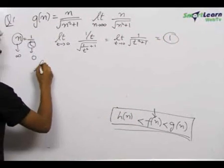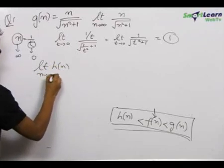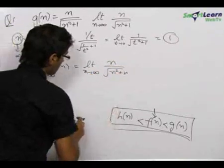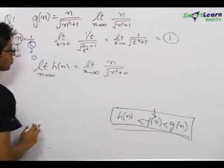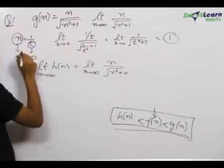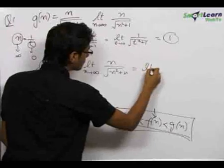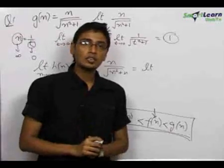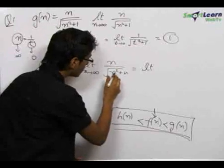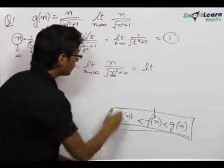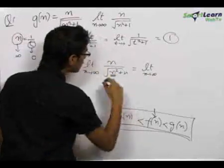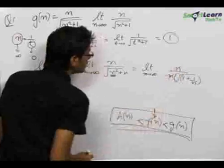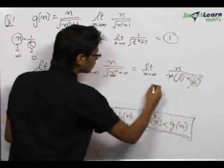Now we find the limit of h(n) as n tends to infinity, which equals limit of n upon under root n square plus n. Using a different approach: since there is a square root in the denominator, we take out the highest power n square from inside the root. n square comes out as n, giving n upon n times under root 1 plus 1 upon n. As n tends to infinity, 1 upon n tends to 0, so this also becomes 1.